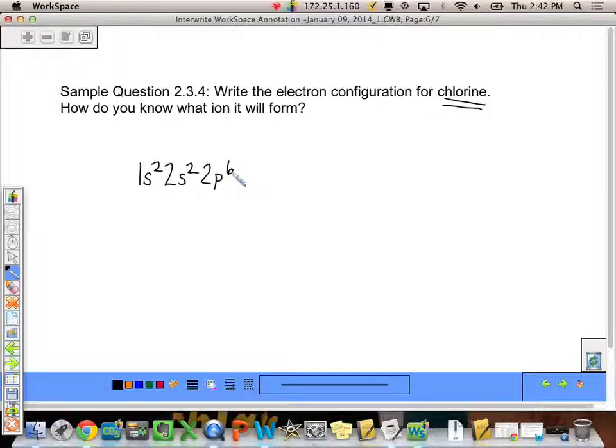Now I'm all the way to neon, but I'm still not to chlorine, so I go down to the next energy level. 3s2, I again skip the expanse, and I get 3p5. So my electron configuration for chlorine is 1s2, 2s2, 2p6, 3s2, 3p5.